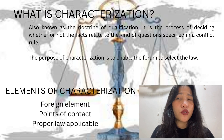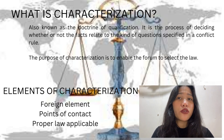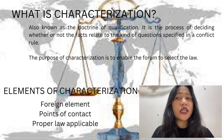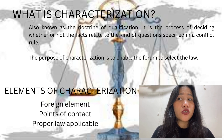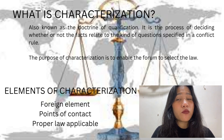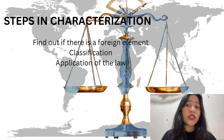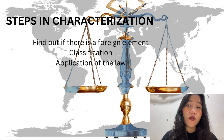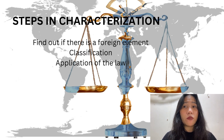Characterization of conflict of laws, or the doctrine of qualification, is the process of deciding whether or not the facts relate to the kind of action specified in a conflict rule. Its purpose is to enable the forum to select the applicable law. The elements of characterization are foreign elements, points of contact, and proper law applicable. The steps in characterization are: find out if there is a foreign element, classify it, and then apply the applicable law.